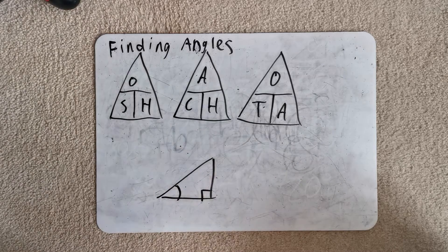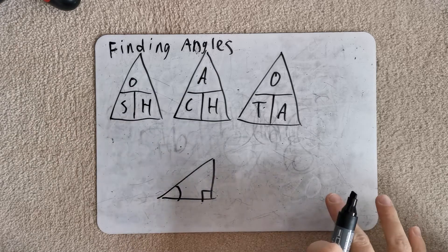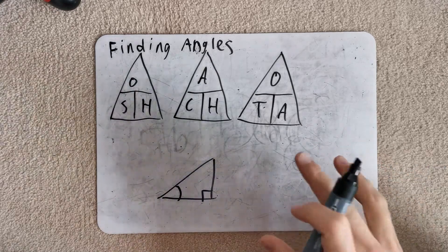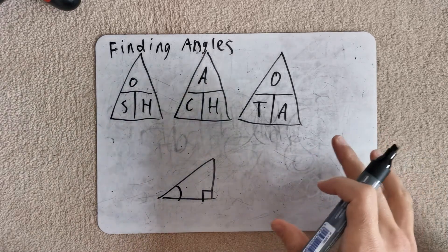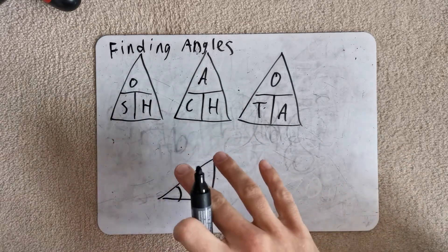Hello again everyone. Carrying on with trigonometry again. Last time we were finding sides of a right angle triangle when you're given an angle and another side, so you could find any of the other sides.